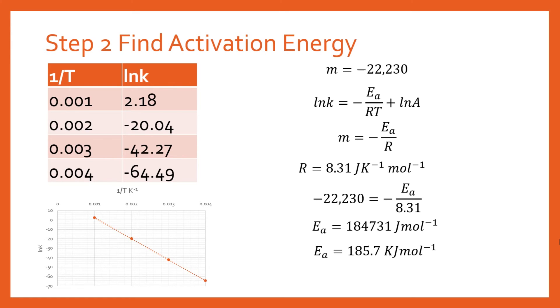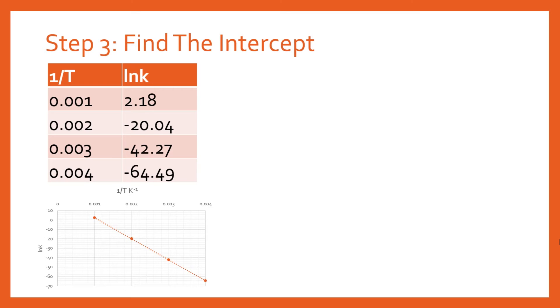Now that we've got the activation energy, the final step is to find the intercept. From the intercept, we can get the value of our Arrhenius constant. We've got the gradient from the previous answer. The next step is we need to find a point on this line, and we can substitute that point into our equation. Now you just choose any point from your line. I know for a fact that this point is actually on the line, so I'm going to use this point here.